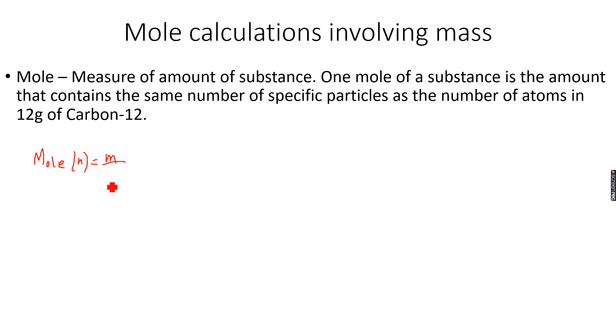So in this case, in 12 grams of carbon-12, the mass that is given to us is 12, that means we have 12 grams in the sample, and the Ar of carbon-12 is 12. So we get 1.